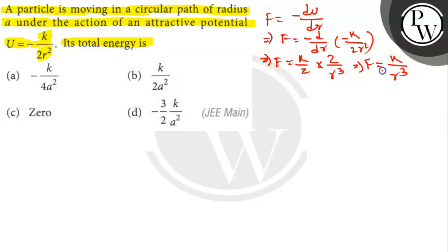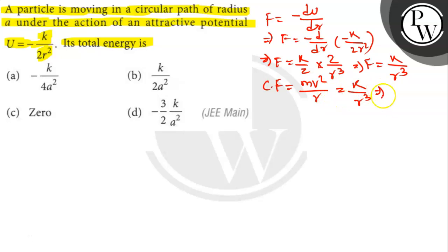Since the motion is in a circular path, centripetal force is present and the force of attraction will be equal to the centripetal force. The centripetal force is given by mv square by r. Equating the centripetal force and the force of attraction, we get mv square by r equals k by r cube, so mv square equals k by r square.